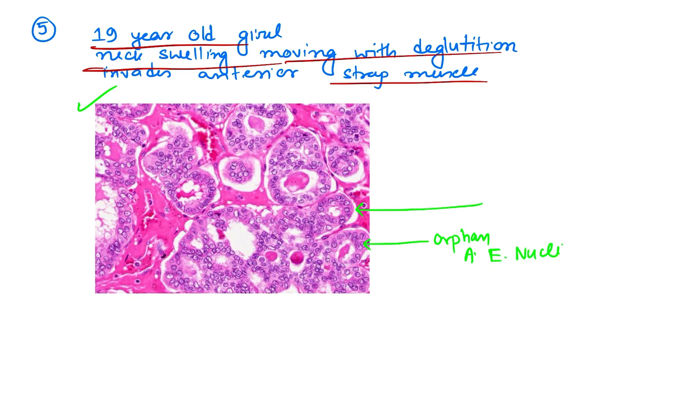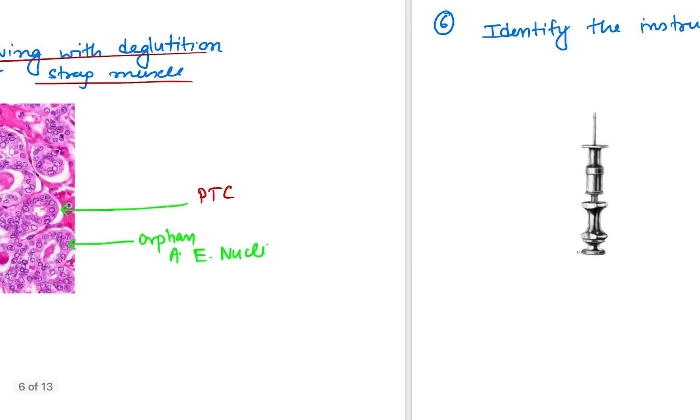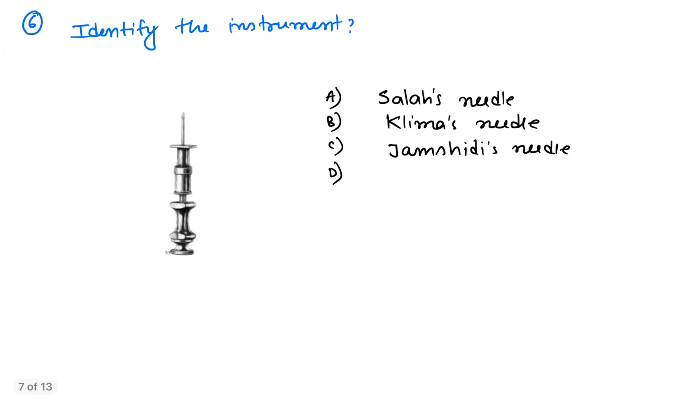So this is Orphan Annie nuclei, suggestive of which carcinoma? Yes, you are very right. This is nothing but PTC, papillary thyroid carcinoma. So very common image, repeatedly asked for INICET or MCI exams. This is papillary carcinoma of thyroid.